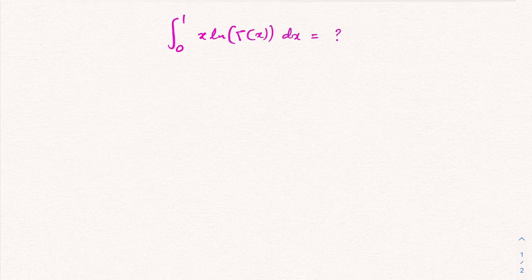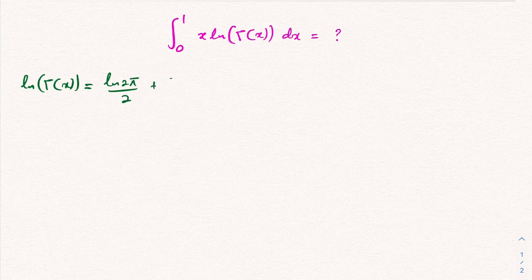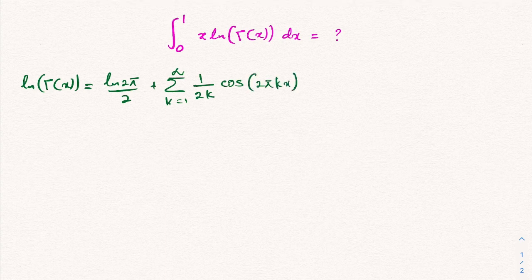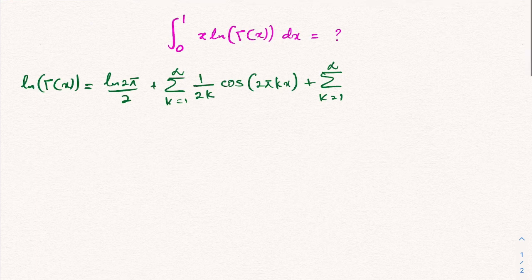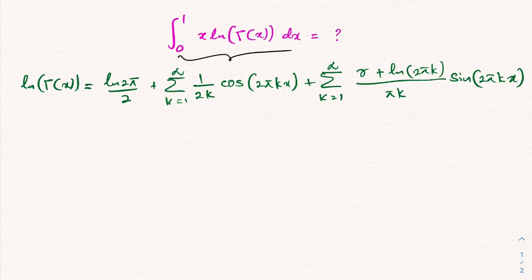In a previous video we already discussed the Kummer series — the Fourier series expression of the natural log of the gamma function. We know that ln(Γ(x)) equals ln(2π)/2 plus the infinite sum from k=1 to infinity of (1/(2k))·cos(2πkx), plus the infinite sum from k=1 to infinity of (γ + ln(2πk))/(πk) · sin(2πkx), where γ is the Euler–Mascheroni constant.